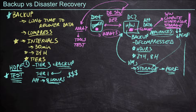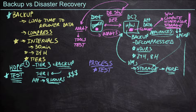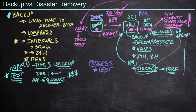Regardless of the methodology we use, we need to think through the process to bring our virtual machines back online and test that process to know for certain how long it will take and how much data we might lose. If we think through a replication scenario — we've just lost data center one, we flip a switch and we're now running in data center two. If we test this and we've got a 15-minute back-online time and only lose 15 minutes of data, that's pretty good.